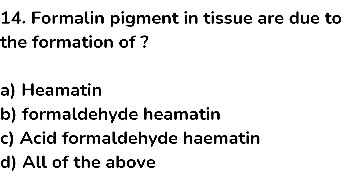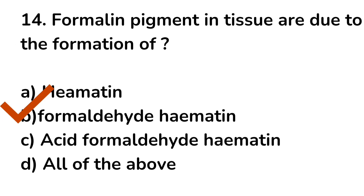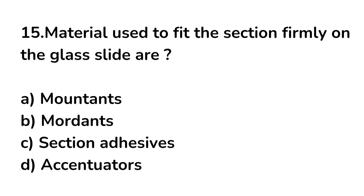Question number 14. Formalin pigment in tissue is due to the formation of: option A. Hematite, option B. Formaldehyde hematin, option C. Acid formalin hematin, option D. All of the above. The right answer is option B, formaldehyde hematin. The formaldehyde pigment in tissue is due to the formation of formaldehyde hematin.